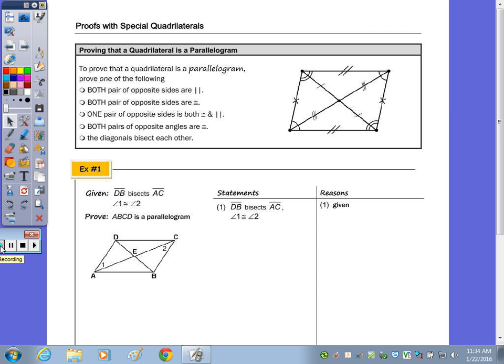When you do any of the proofs, and this is the same process for both coordinate geometry and the two-column proof, you should be thinking about all the properties of that quadrilateral that you're trying to prove.